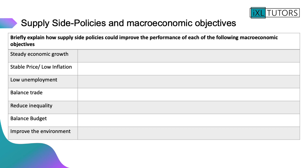It's really important to understand how supply side policies could improve the performance of each of the macroeconomic objectives. We're going to link supply side policies to macroeconomic objectives. Explain how a supply side policy could: give an economy more stable growth; stabilise prices; decrease unemployment; create more balanced trade; reduce inequality; balance the budget; and improve the environment. Pause here — it should take you about six minutes.